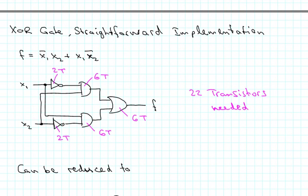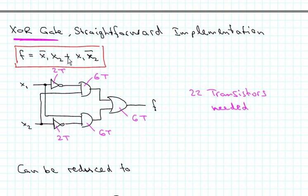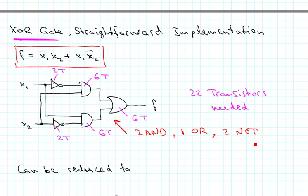Now let's look at the more complicated XOR gate. The function of XOR is x1' · x2 + x1 · x2'. A straightforward implementation uses 2 AND gates, 1 OR gate, and 2 inverters. In terms of transistors, each AND gate uses 6, so 2 AND gates give 12 transistors; the OR gate uses 6; and each NOT gate uses 2, giving 4 for the two inverters. Altogether that means 22 transistors in the straightforward implementation.